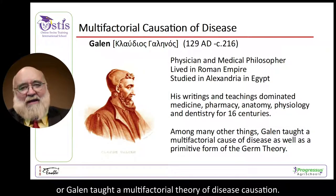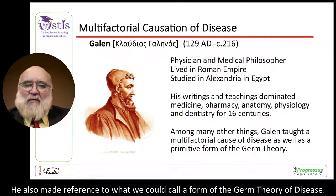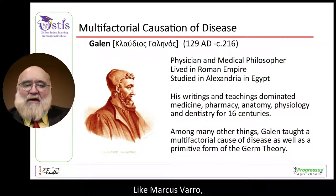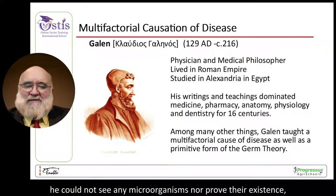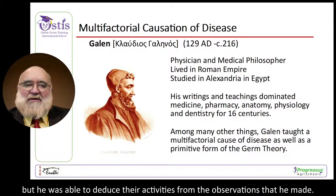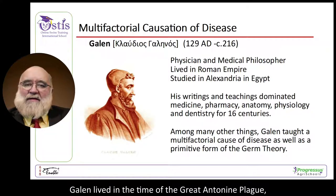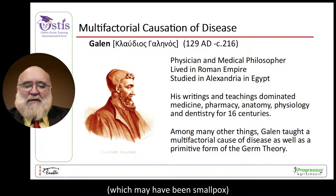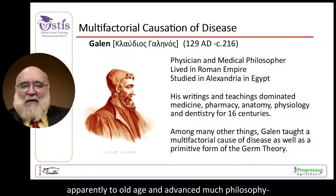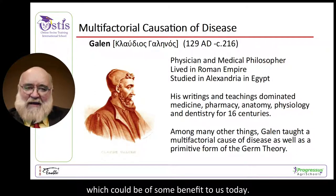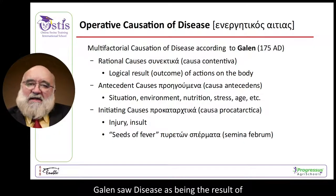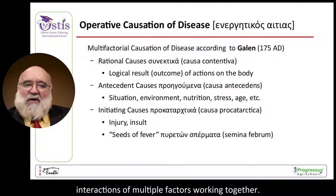Claude Galen taught a multifactorial theory of disease causation and also made reference to a form of the germ theory. Like Marcus Varro, he could not see any microorganisms nor prove their existence, but he was able to deduce their activities from his observations. Galen lived in the time of the great Antonine plague, which may have been smallpox, lived through it apparently to old age, and advanced much philosophy that could be of benefit to us today. Galen saw disease as being the result of interactions of multiple factors working together.